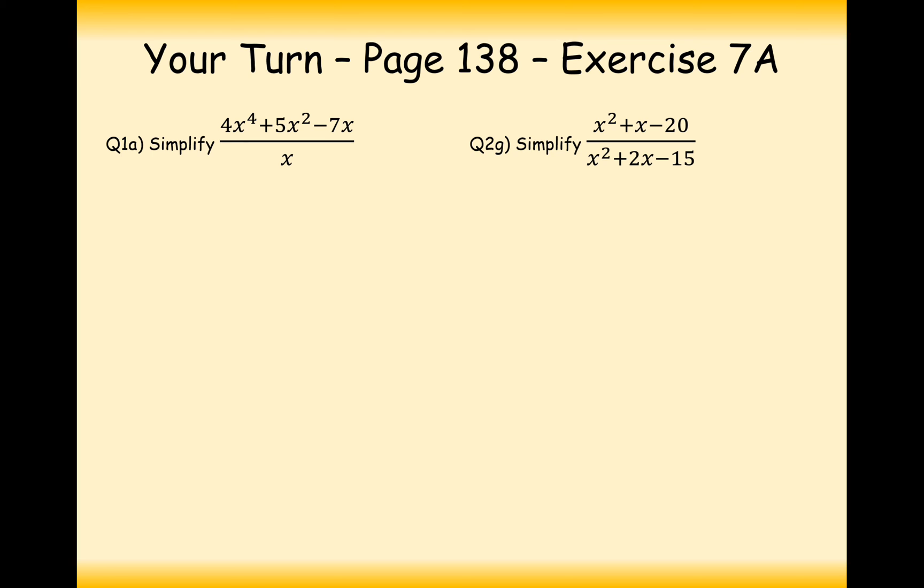All right, well done for having a go at this question then. So for the first one here we can just cancel out one of the powers on each of the x terms. If there's just one x term, you cancel it out fully. So you're going to get 4x³ plus 5x minus 7 is your final answer for 1a.